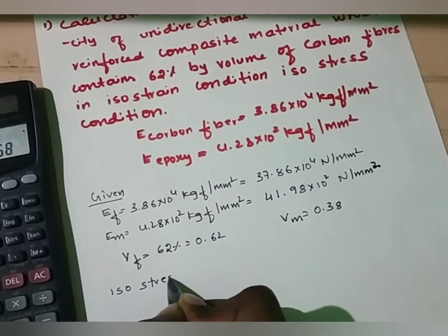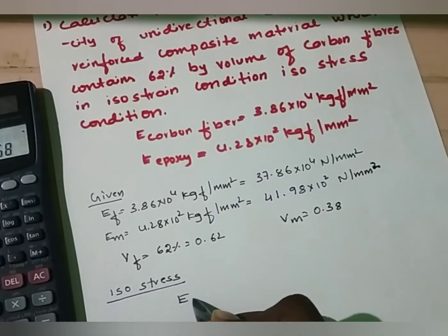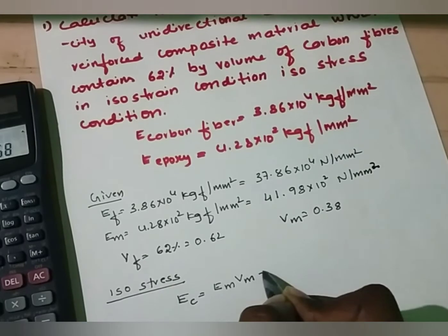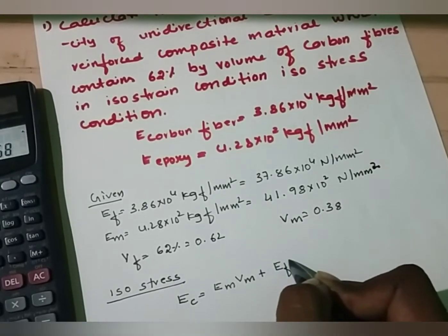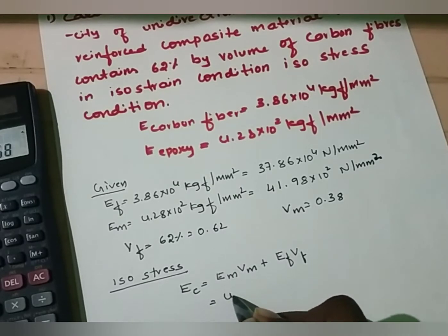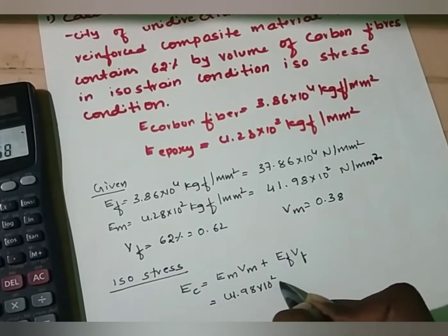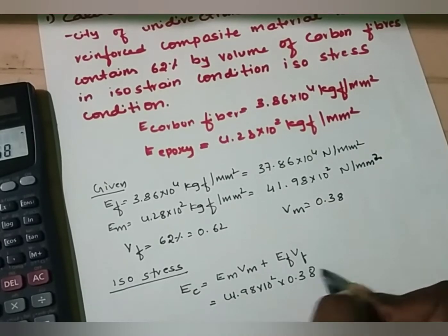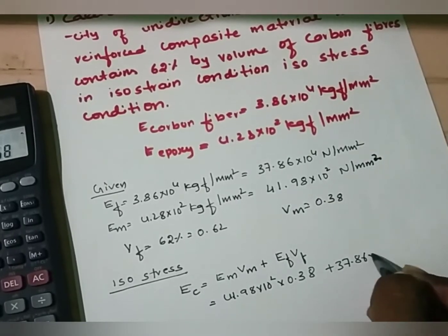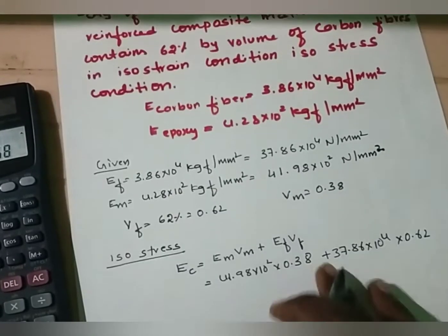First, at isostrain condition, the formula is: Ec = Em × Vm + Ef × Vf. Substituting: Em = 41.98 × 10² × 0.38, and Ef = 37.86 × 10⁴ × 0.62.